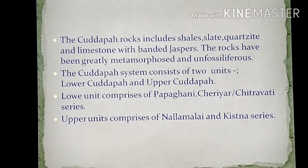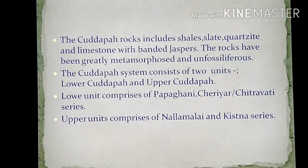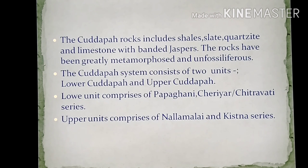The Kadappa rocks include shale, slate, quartzites, and limestones with banded jaspers. The rocks have been greatly metamorphosed and they are unfossiliferous. The Kadappa system consists of two units: Lower Kadappa and Upper Kadappa. The lower unit comprises the Papagani and Chedaya or Chitravati series, and the upper unit comprises the Nallamalaya and Kistana series.